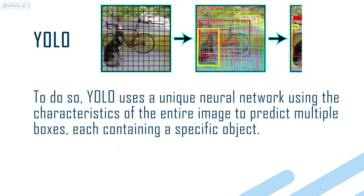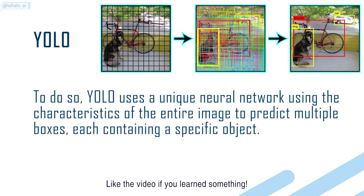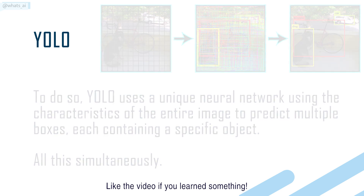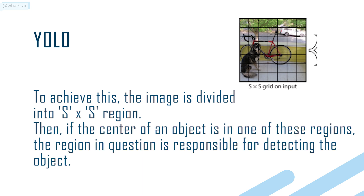To do so, YOLO uses a unique neural network, using the characteristics of the entire image to predict multiple boxes, each containing a specific object — all this simultaneously. To achieve this, the image is divided into an S by S region grid.